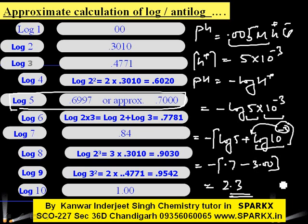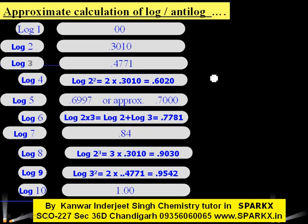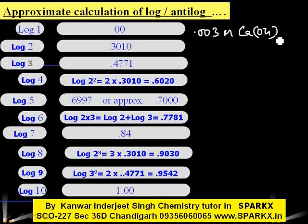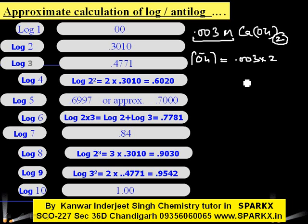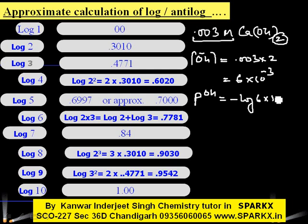For a base, let's suppose we have 0.003 molar Ca(OH)₂. The OH⁻ ion concentration equals the molarity multiplied by the n-factor. Since Ca(OH)₂ gives 2 OH⁻ ions, the OH⁻ concentration = 0.003 × 2 = 6 × 10⁻³. Now, pOH = −log(6 × 10⁻³).